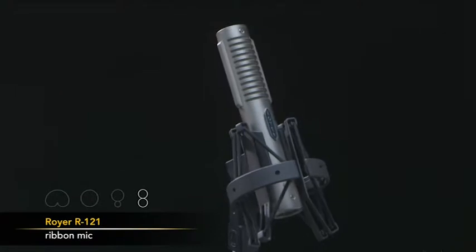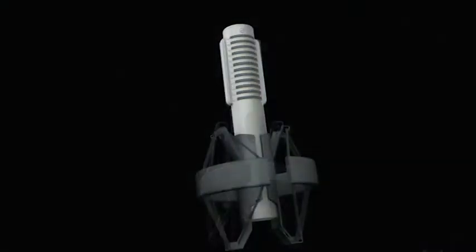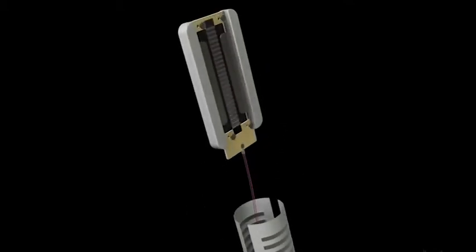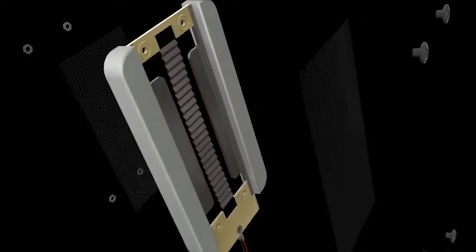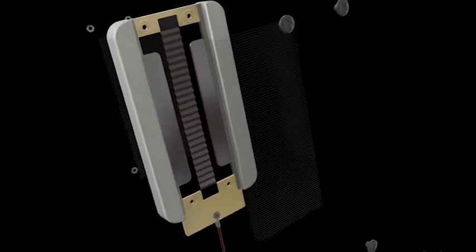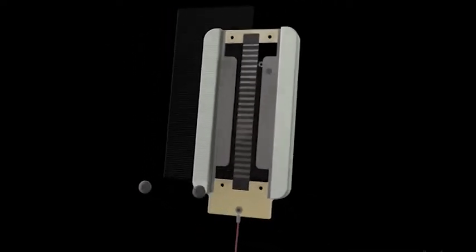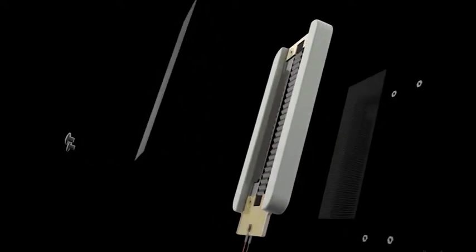The ribbon microphone operates almost the same as the dynamic microphone but uses a strip of extremely thin aluminum foil as a diaphragm instead of a relatively heavy coil of wire. This means that it moves quickly in response to acoustic sound, which also means that it has a great high frequency response.